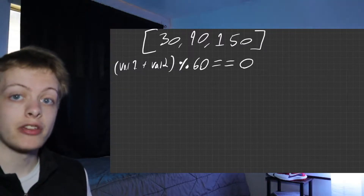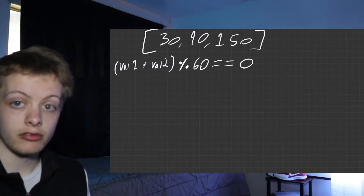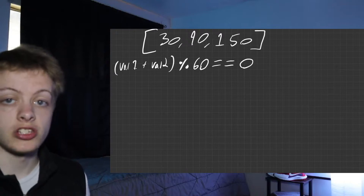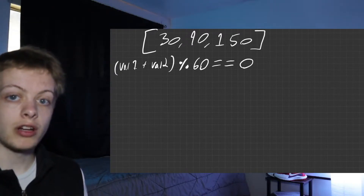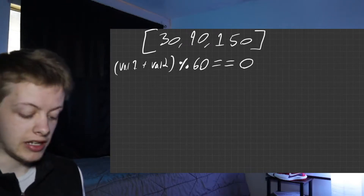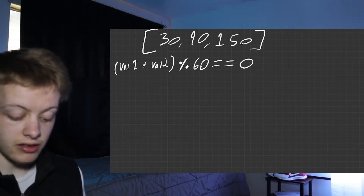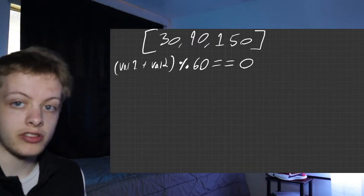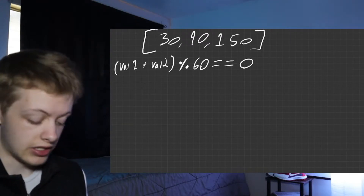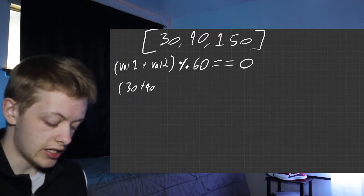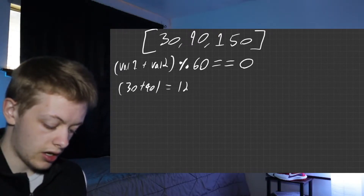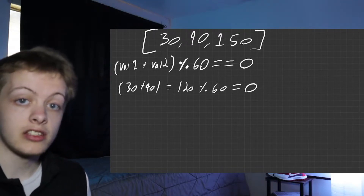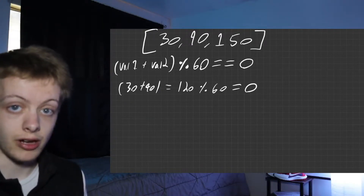Let's get into an example and see how we can approach this problem. I made a very simple array with the values 30, 90, and 150. Each of these values represents the duration of a said song. A pair means value 1 plus value 2, divisible by 60, or mod 60 equal to zero. Let's take 30 and 90 — 30 plus 90 gives us 120, and 120 mod 60 equals zero. So those two are a pair of songs divisible by 60.